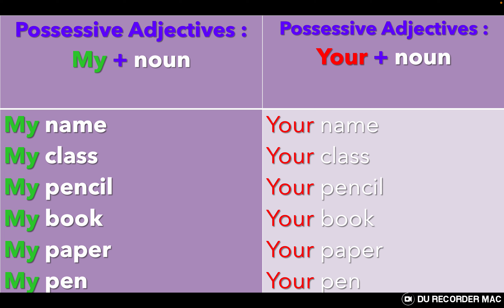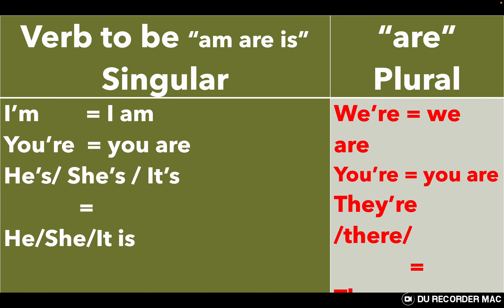Try to practice them many times and try to add other nouns. The verb 'to be' in the singular form: I am, you are, he is, she is, it is. In the plural form: we are, you are, they are.